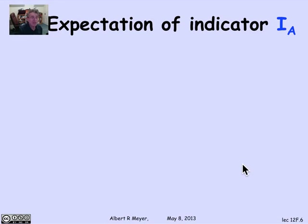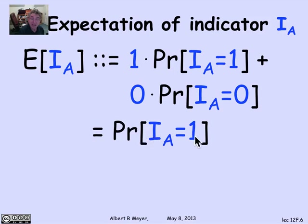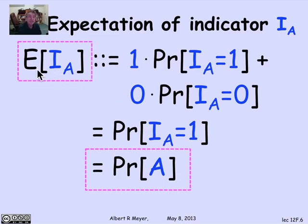Let's make use of linearity. First, a trivial but very important remark about the expectation of an indicator variable. I sub A is the random variable equal to 1 if event A occurs and 0 otherwise. The expectation of the indicator variable is 1 times the probability it equals 1, plus 0 times the probability it equals 0. The probability that I_A equals 1 is exactly the probability of A. So the expectation of the indicator variable for event A is simply the probability that A occurs.